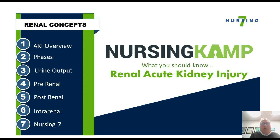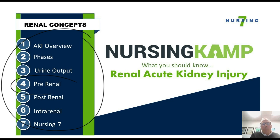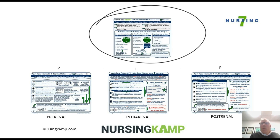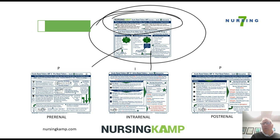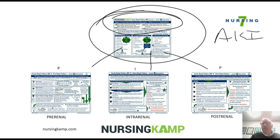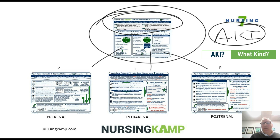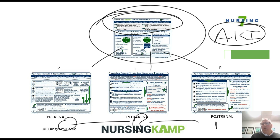This is the Nursing 7, where I cover all seven areas of acute kidney injury. Right now we're going to be talking about pre-renal failure. With acute kidney injury, there's a further classification: whether it's a pre-renal problem, an intra-renal problem, or a post-renal problem. Pre-renal is before the kidney, intra-renal is inside the kidney, and post-renal is after the kidney.